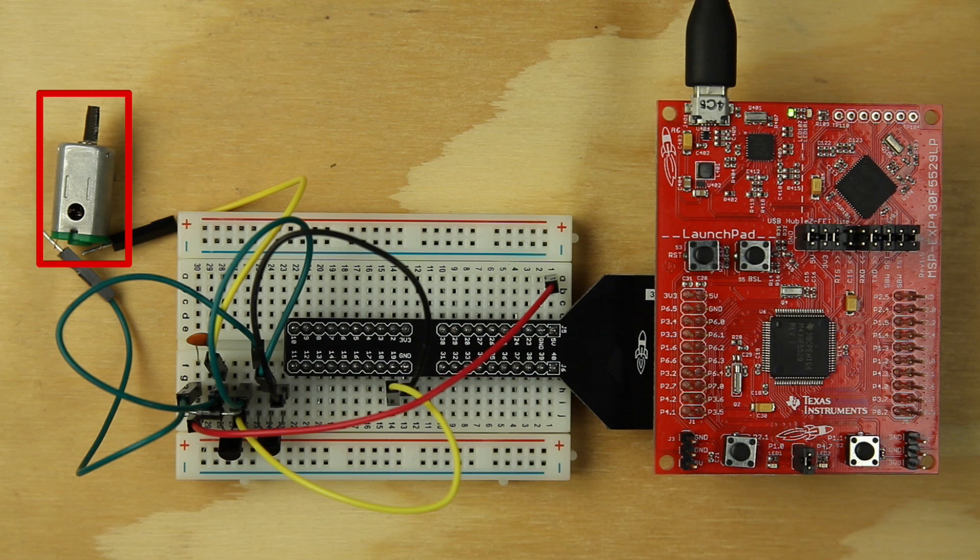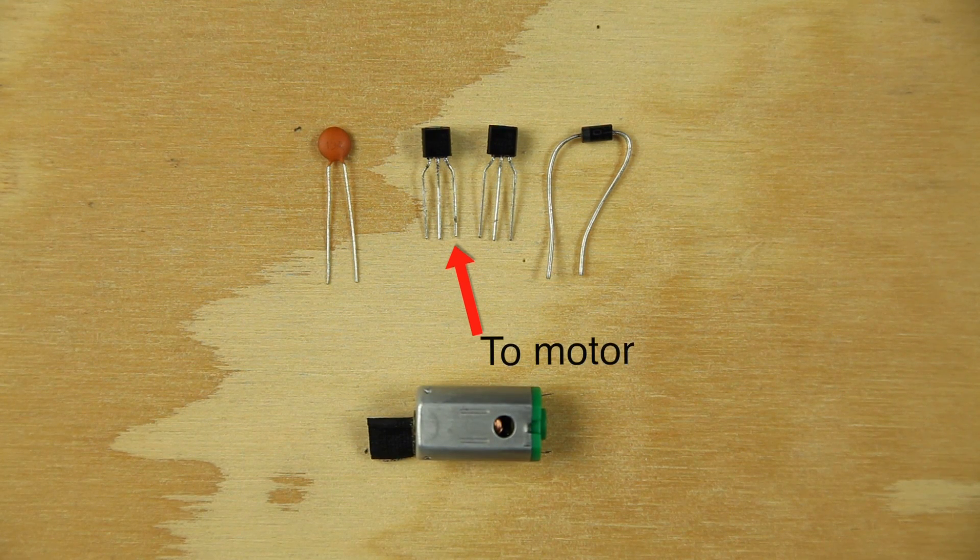Connect our motor to the circuit by threading jumper wires through the motor leads. We will tie one motor lead to our 5-volt pin and the other motor lead to our right transistor leg.